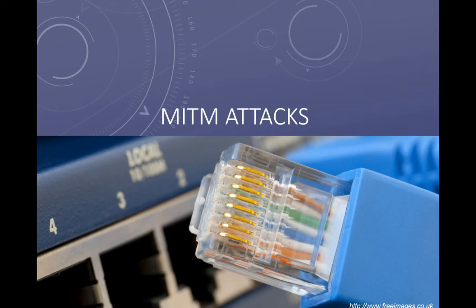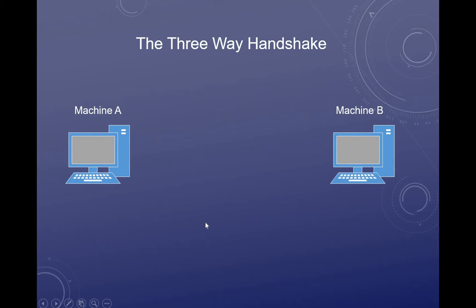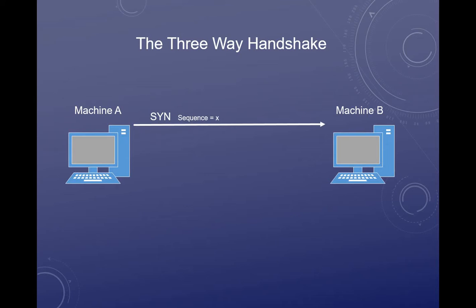We need to talk about the three-way handshake. When two machines want to talk to each other over a TCP connection, they both have to follow some steps before data transfer can happen. Let's say machine A wants to talk to machine B. Machine A will send a packet to machine B known as the SYN packet, and in that packet there is a sequence number — we'll call it sequence X.